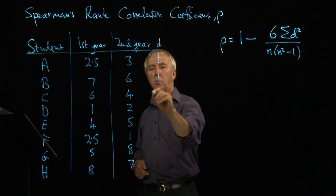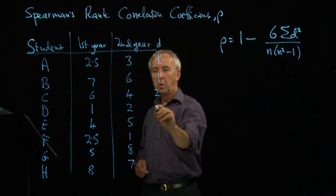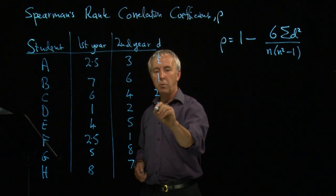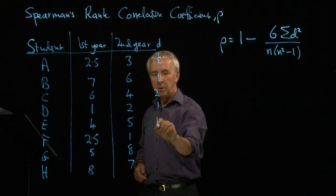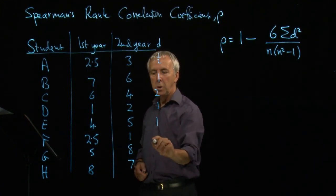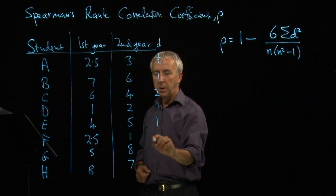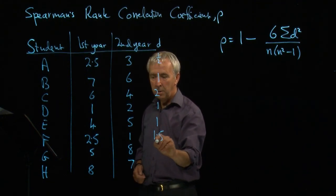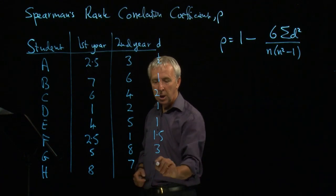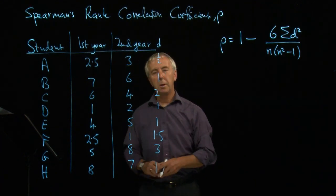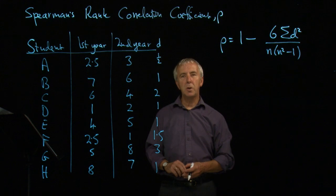Seven minus six is one. Six minus four is two. One minus two, the difference is one. Five minus four, the difference is one. Two and a half take away one is one and a half. Five take away eight, the difference is three. Eight take away seven, the difference is one. So that gives us d.